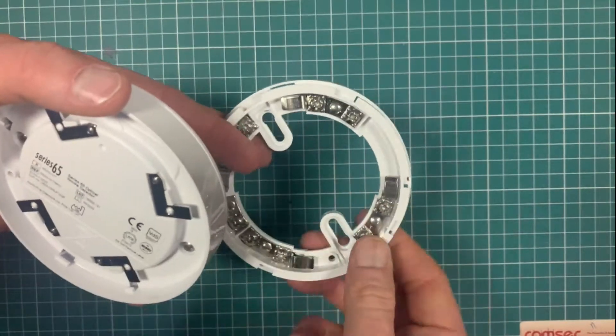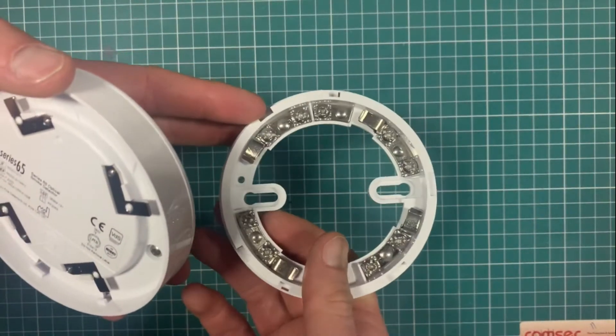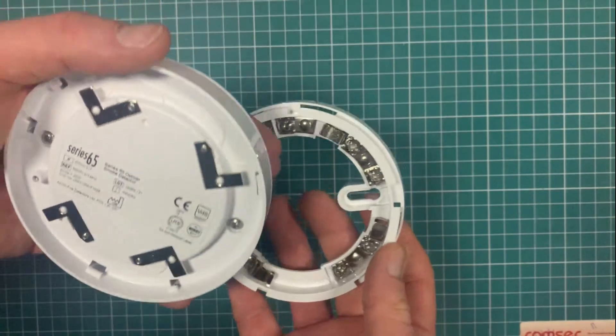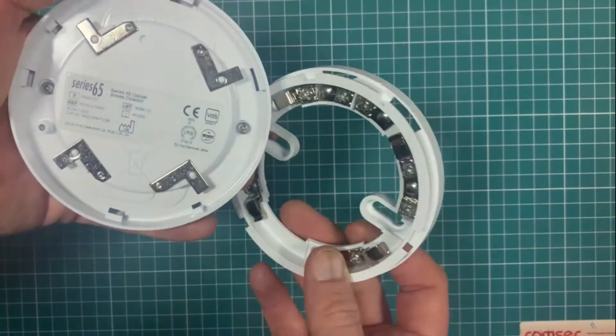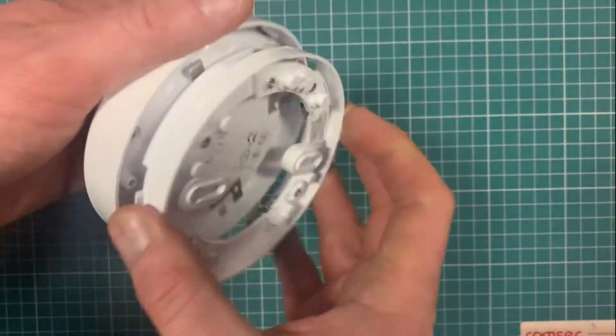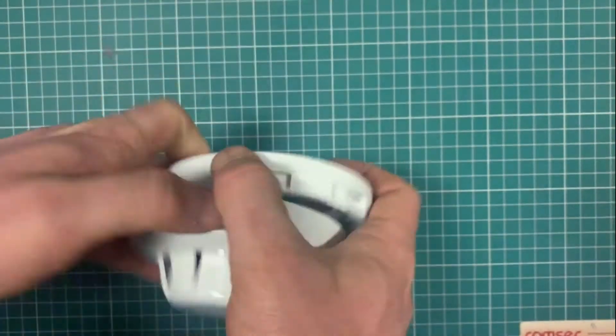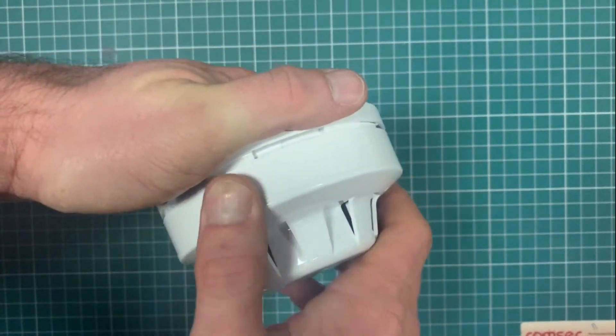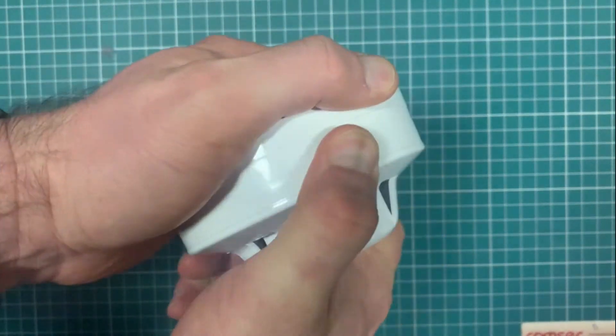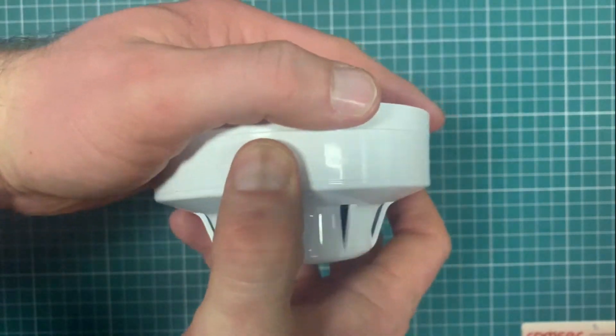That's the base. You connect it in: L1 for your positive, L2 for your negative. There's an output there for your LED. I've done a separate video on the base already. When you're installing it, you're basically up in the ceiling. The detector just clicks in, and you feel it go in and it comes back out.